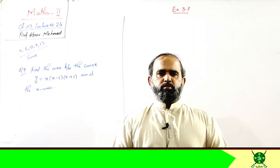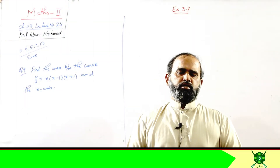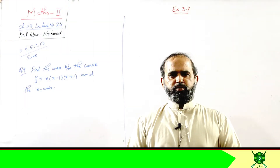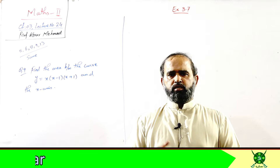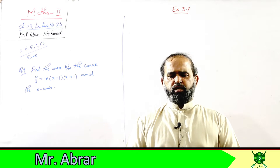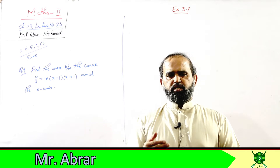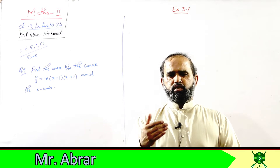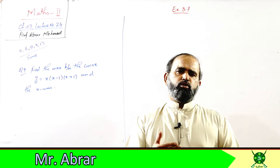Bismillahirrahmanirrahim, Asalamu Alaykum students. Last time in exercise 3.7 we did 2 cases — the first type had questions where both lower limit and upper limit were given, totaling 7 questions, of which I did 2 questions for you.